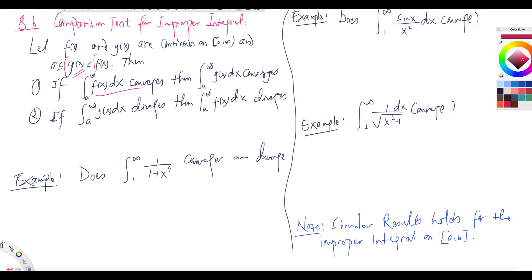Similarly, if the integral of the smaller function g(x) diverges — if that integral is infinity — then the bigger function's integral will also be infinity, so it also diverges. But the other way does not hold: if g(x) converges, we cannot say f(x) converges; and if f(x) diverges, we cannot say g(x) diverges.